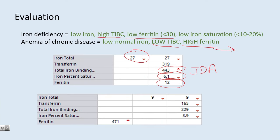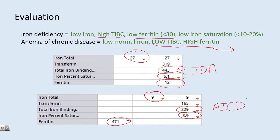In contrast, this second patient has low iron levels, low TIBC, a low iron percent saturation, but their ferritin is actually elevated. This is going to be anemia of inflammation or chronic disease.